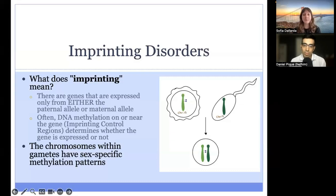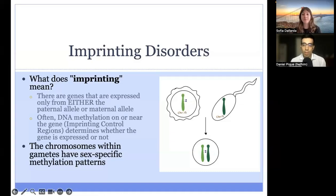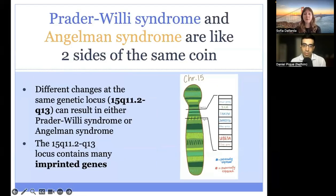This parental-specific gene expression occurs because the chromosomes in gametes have sex-specific methylation patterns. Oocytes have maternal-specific methylation patterns, and the chromosomes in spermatids have paternal-specific methylation patterns, and we inherit the balance of expression from both to achieve a healthy outcome. One additional note here is that imprinted does not necessarily mean methylated, and methylated does not necessarily mean not expressed. Rather, when a chromosome is imprinted, there is methylation on either the paternal or maternal allele, and this results in different gene expression from each allele. We'll look more closely at what this means for Prader-Willi syndrome and Angelman syndrome in just a few slides.